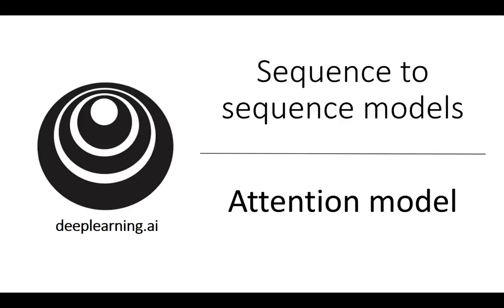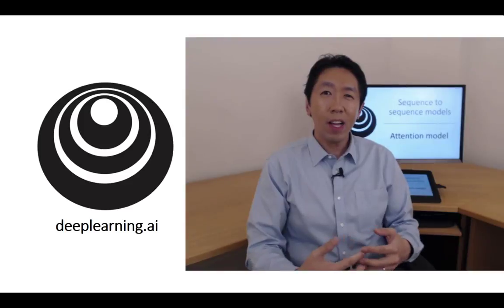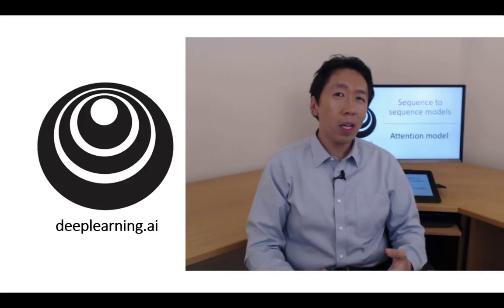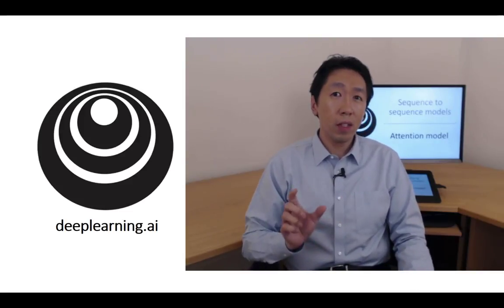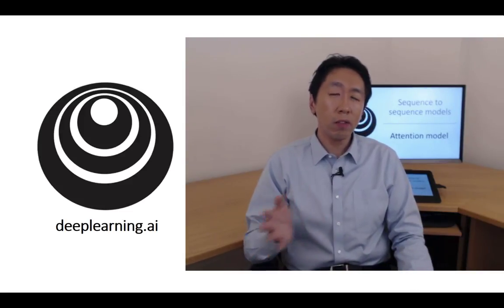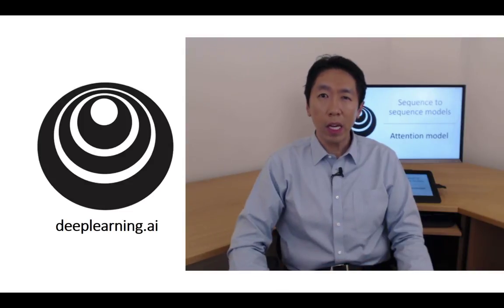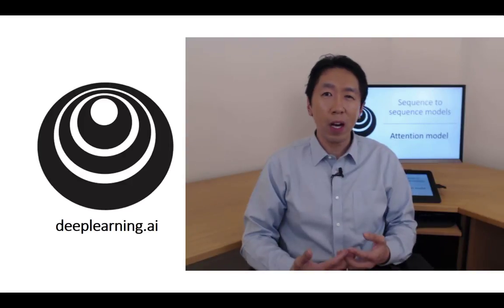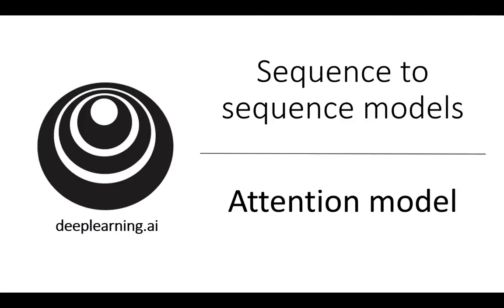In the last video, you saw how the attention model allows a neural network to pay attention to only part of an input sentence while it's generating a translation, much like a human translator might. Let's now formalize the intuition into the exact details of how you would implement an attention model.